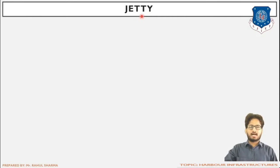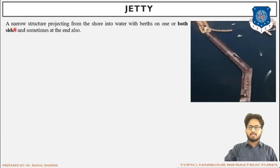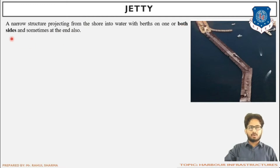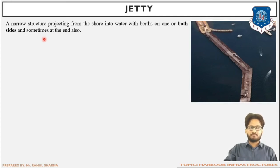We have already come across this word while studying harbor components in Chapter 2. To revise: a jetty is a narrow structure projecting from the shore into water, with berths on one or both sides. It projects from the shore into water, having berthing facility on both sides, and very rarely on the end portion.